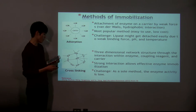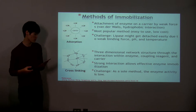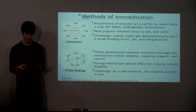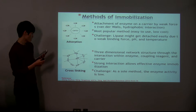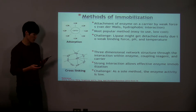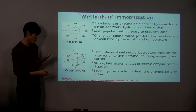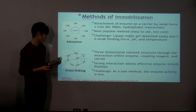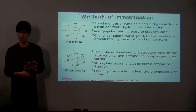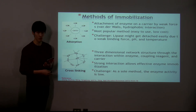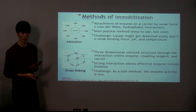An existing challenge with this method is the enzyme detaching very easily due to pH and temperature changes. Currently, more efforts are being made to find a better carrier that can hold the enzyme better while the reaction proceeds. The second method is the cross-linking of the enzyme with a coupling reagent and carrier. The strong network between the particles gives strong enzyme immobilization, but as a sole method, the activity of the enzyme is very low. So this method is usually combined with other methods such as adsorption or entrapment.